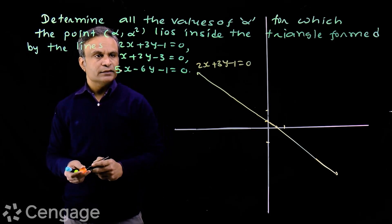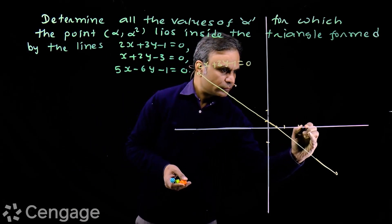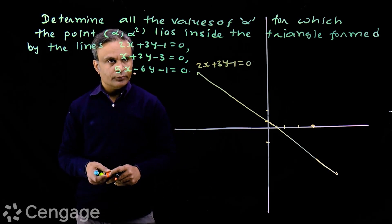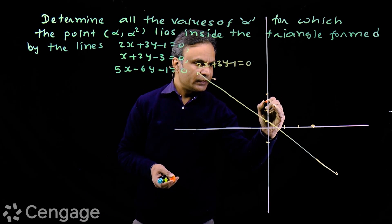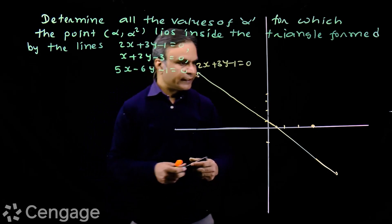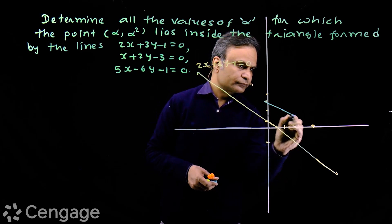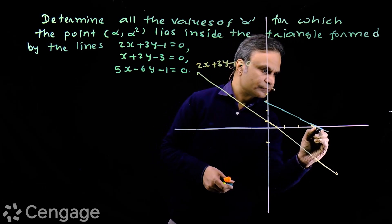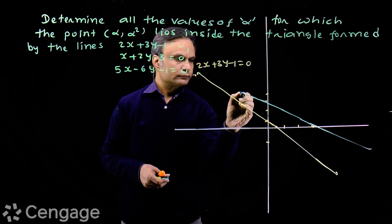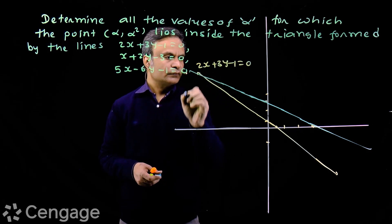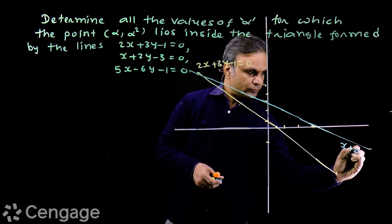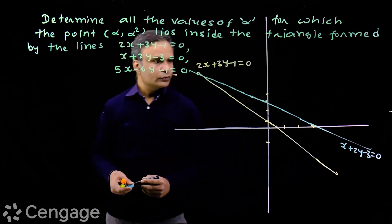Now let us draw the next line. For x + 2y - 3 = 0, the x-intercept is 3 and the y-intercept is 3/2, which is 1.5. The line passes through these two points. We draw this line accordingly. This is the straight line x + 2y - 3 = 0.